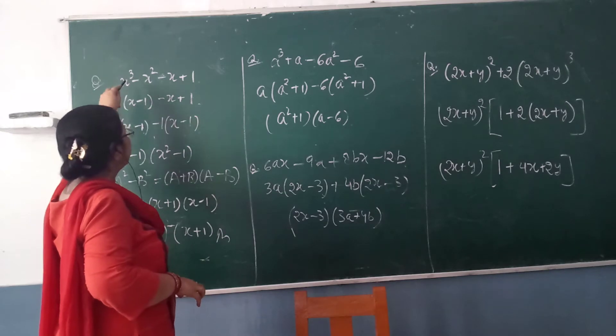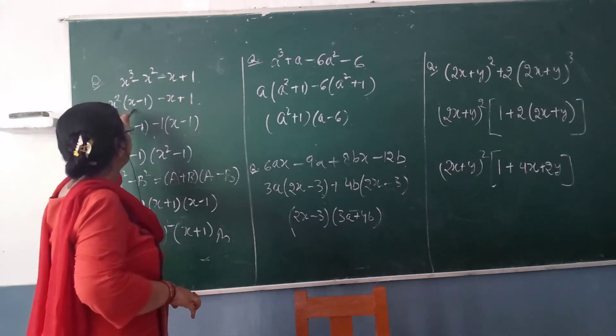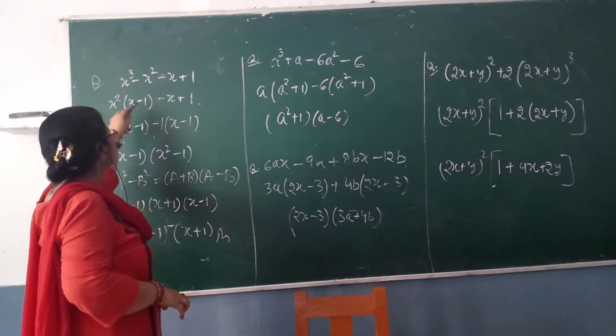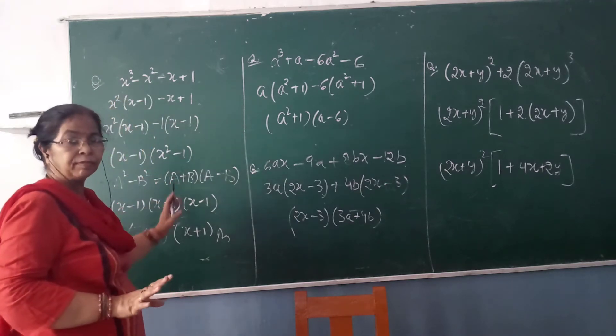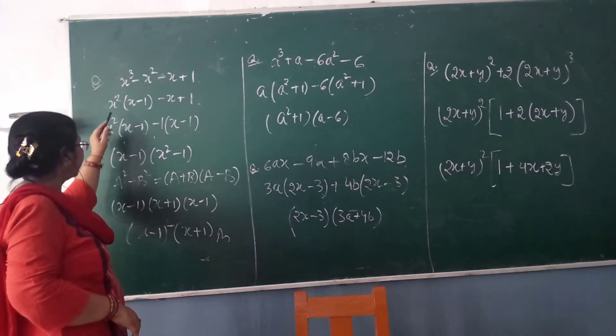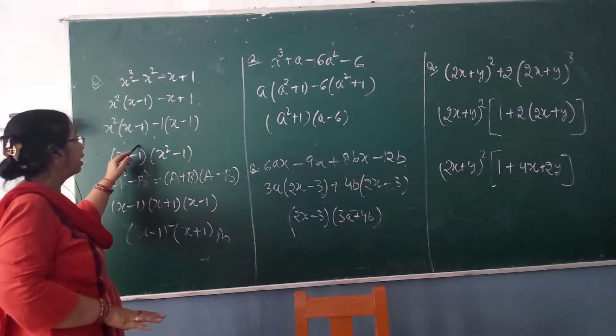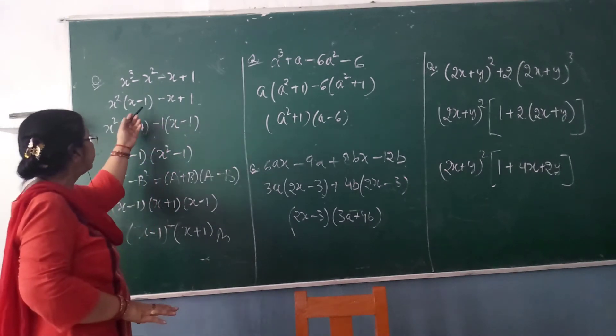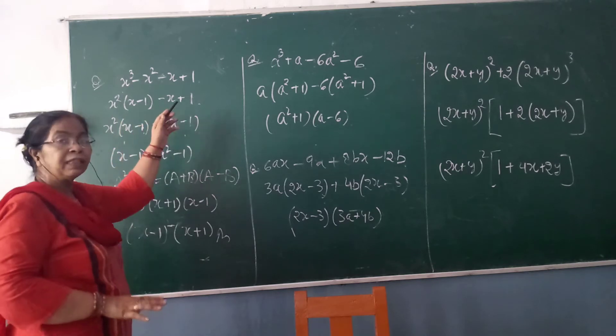In this way we are taking common. Then x² bracket, we are copying this correctly. Now what will we take common here? It should become similar to x - 1. If you will take minus 1 common, then the same bracket is coming: x - 1.